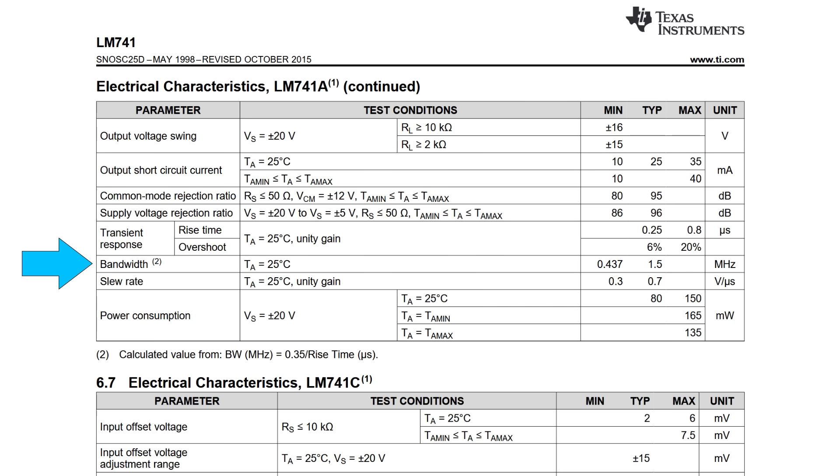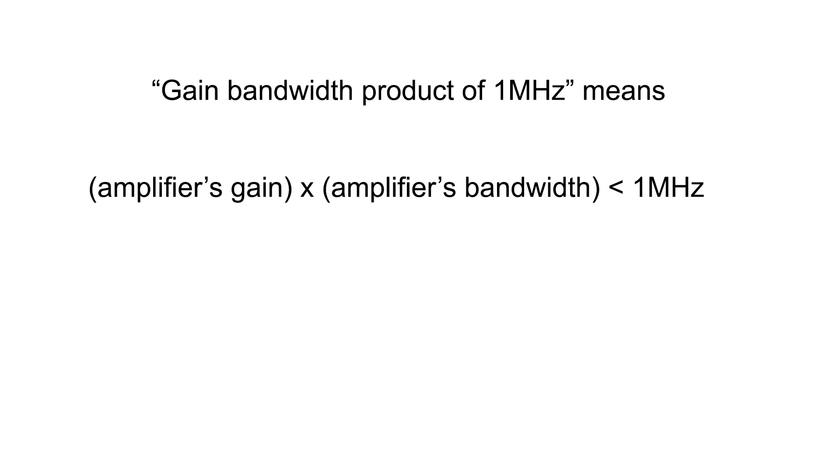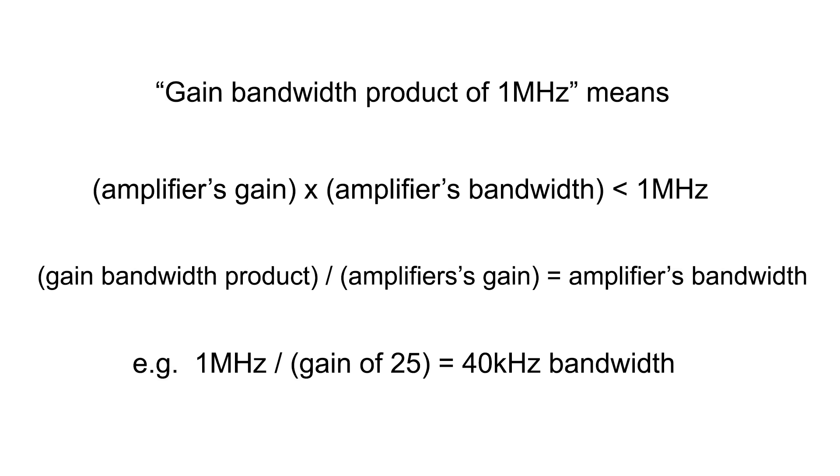If you're new to electronics, you might think, oh, okay, it can amplify up to 1 MHz, so it's more than enough for audio. Well, no. Gain bandwidth product of 1 MHz means that the gain multiplied by the bandwidth has to be less than 1 MHz. In other words, if you rearrange this equation, if you, for example, have a gain of 25, it means that you can only have amplification bandwidth of 40 kHz. You would only get the full 1 MHz bandwidth if your circuit had a gain of 1, i.e. no amplification at all.